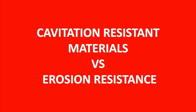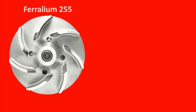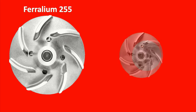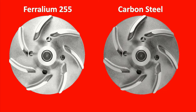Tip number three: focus on cavitation-resistant materials. Studies have shown that some materials are more resistant to cavitation erosion than others. Invest in the right materials if cavitation damage is unavoidable in your system. For example, Feralium 255 has much better cavitation resistance than cast carbon steel — so choose your impeller material wisely.